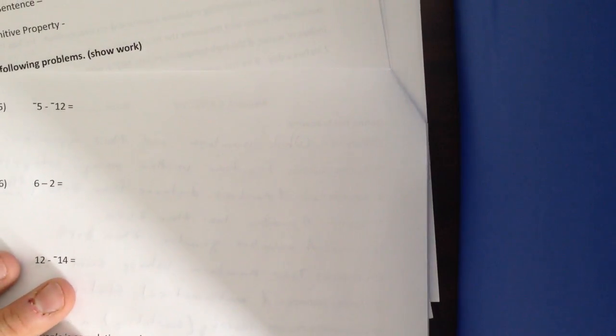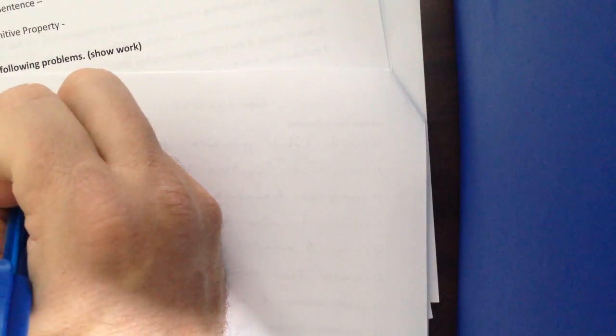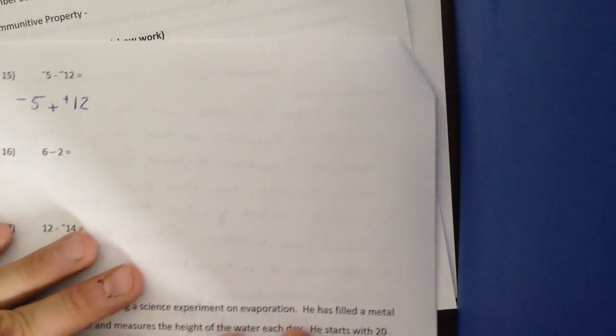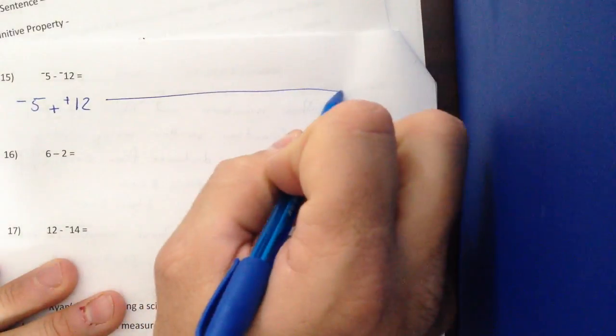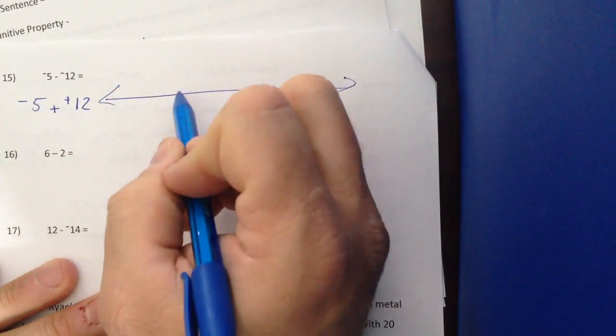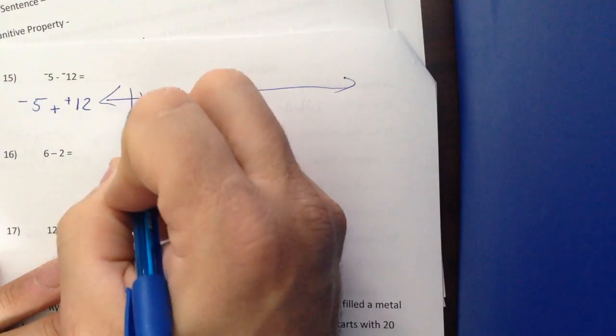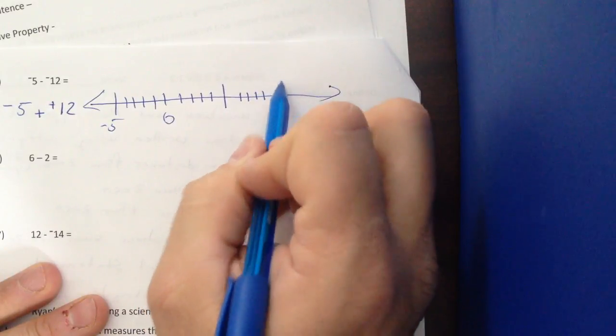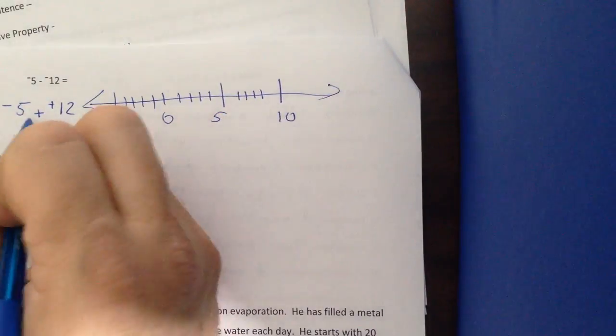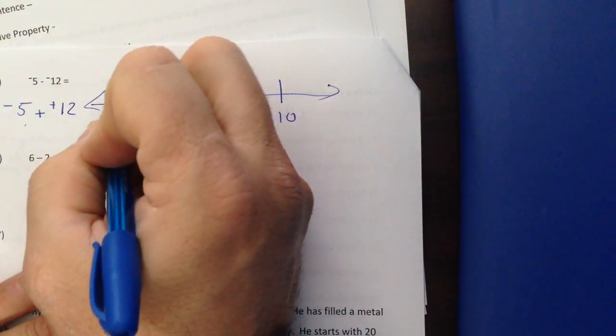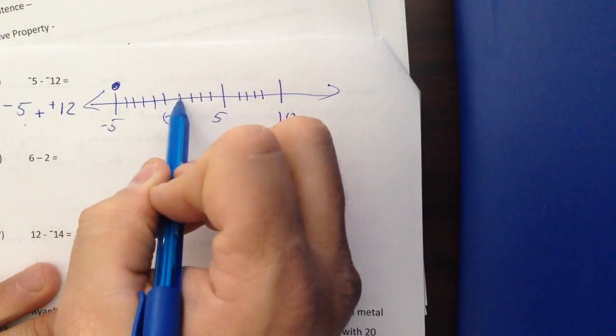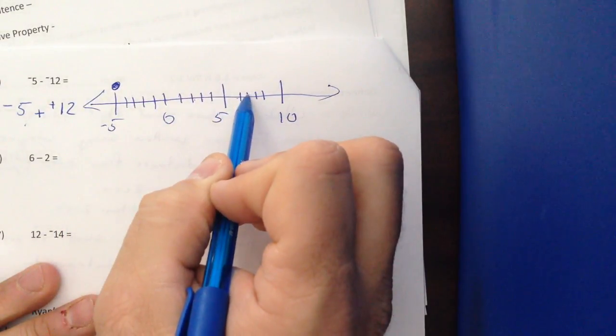Next one, I have negative 5 plus 12. Negative 5 minus negative 12. Sorry, I said plus. I would change to addition, plus positive 12. Now, let's go on this one. Let's use a number line. So let's say 0 is here. 1, 2, 3, 4. Here's negative 5. 1, 2, 3, 4, 5. 1, 2, 3, 4, 10. So using a number line. I start with negative 5, right here. And I'm going up 12. 1, 2, 3, 4, 5, 6, 7, 8, 9, 10, 11, 12. I'm going up to here.